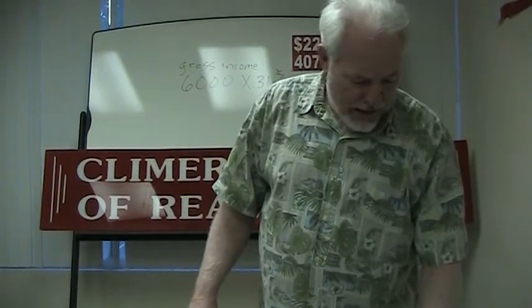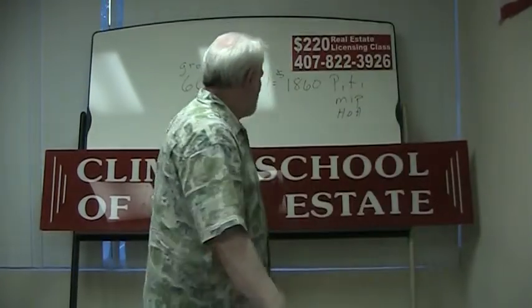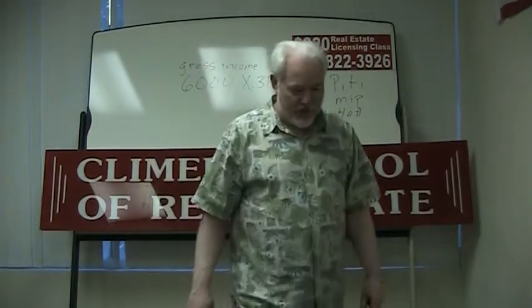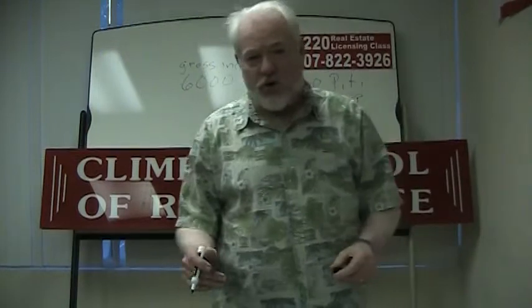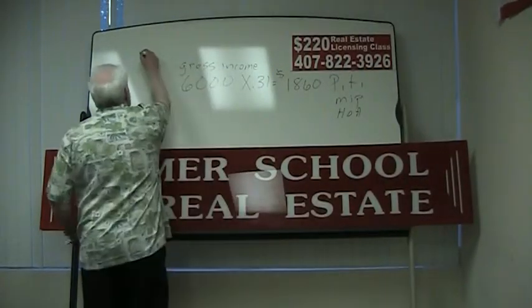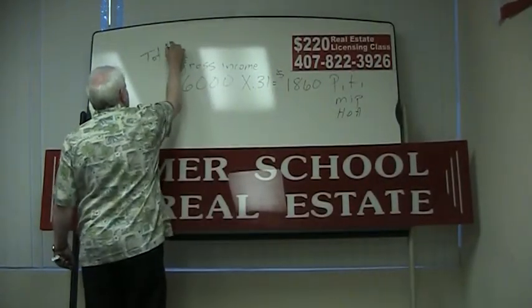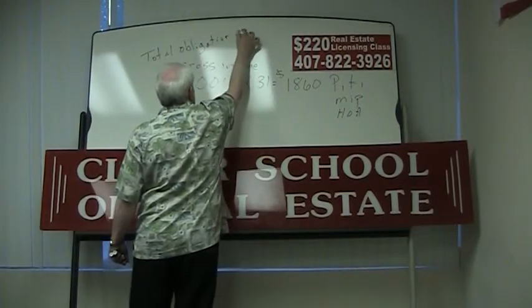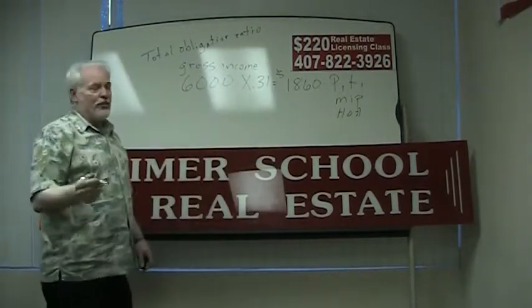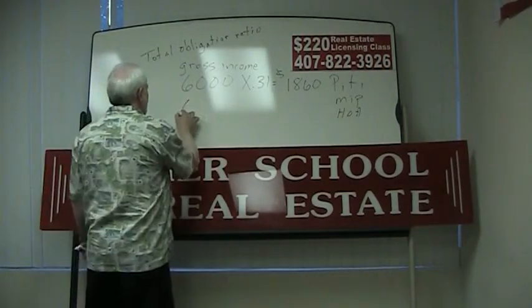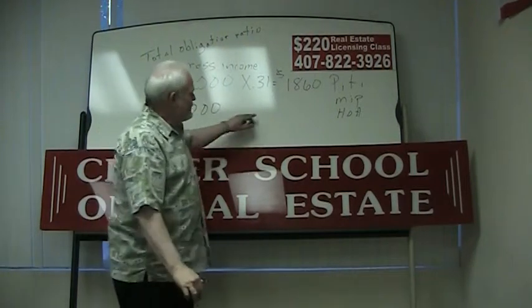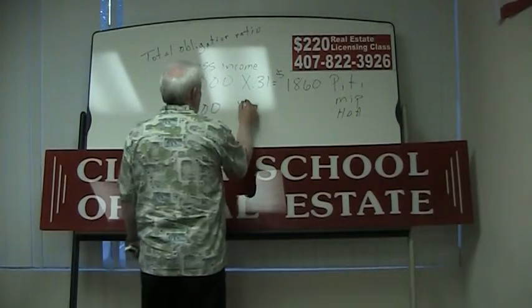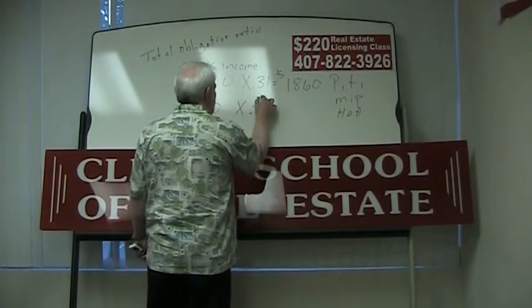So if you have a house payment and you say, well gee, how much house can I get for that? Well, I'm going to tell you in a minute, because there's another half of this equation called total obligation ratio. This is the part that causes most people problems. The maximum is forty-three percent.